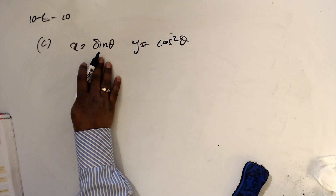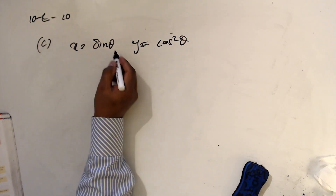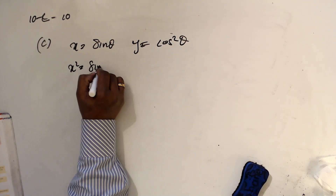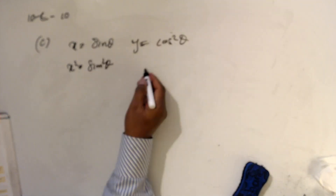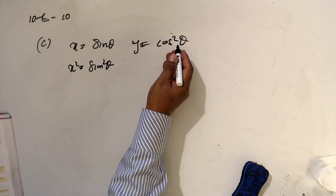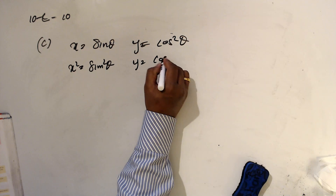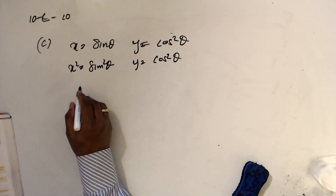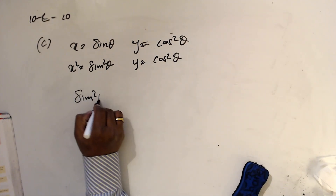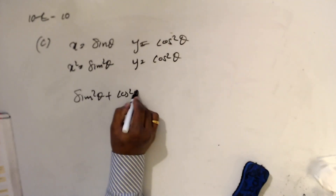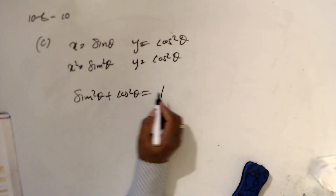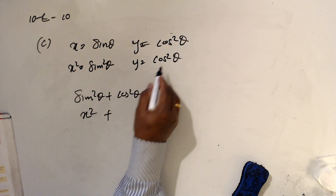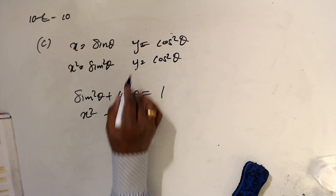Here, x = sin θ, so squaring gives x² = sin²θ. And y = cos²θ, written as it is. From the identity sin²θ + cos²θ = 1, sin² is x² and cos² is not y² — it is y itself.